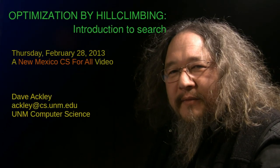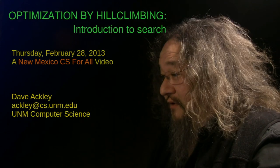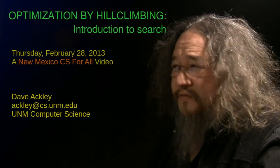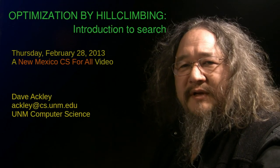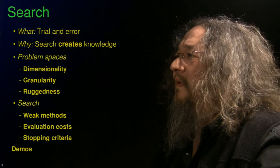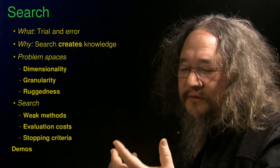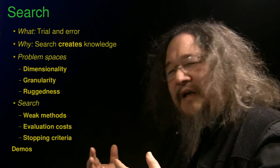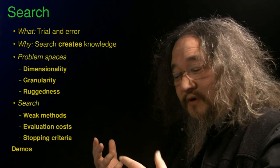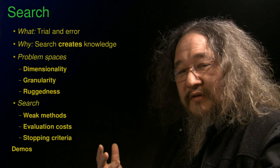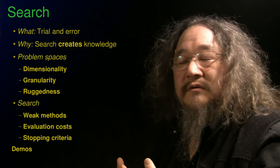Today I want to talk about hill climbing, which is a basic form of search, which is a basic thing that we use computers for. This is part of the class that we're working on in computational thinking and programming. Search is basically the idea of trial and error. Do something to see if it works. If not, do something else until you find whatever works. Once you've found whatever works, you can ignore all the errors and just go straight to the solution in the future.